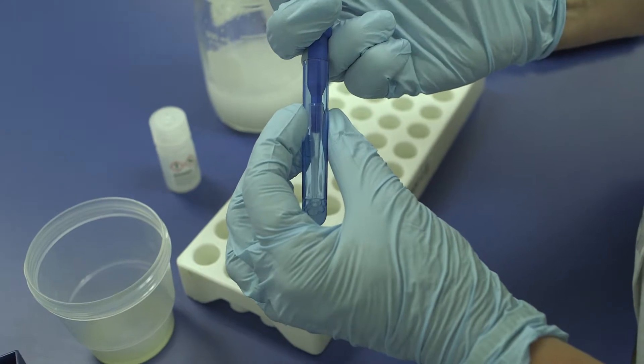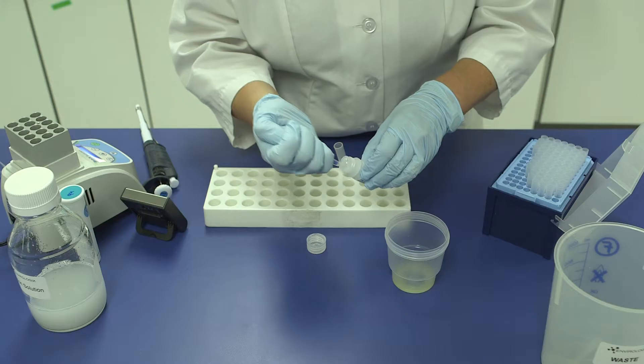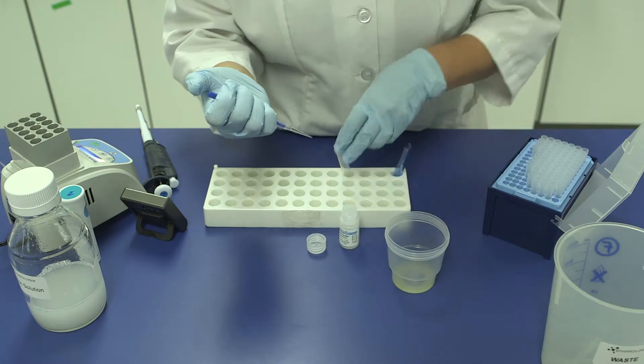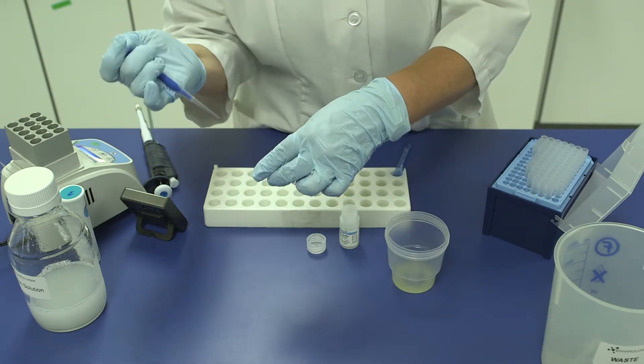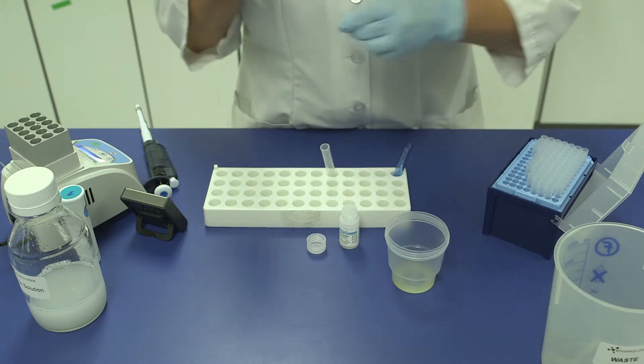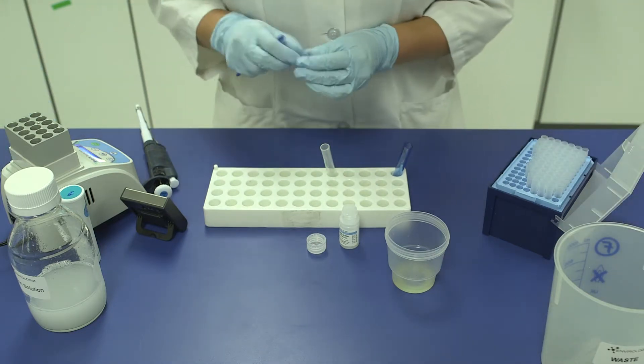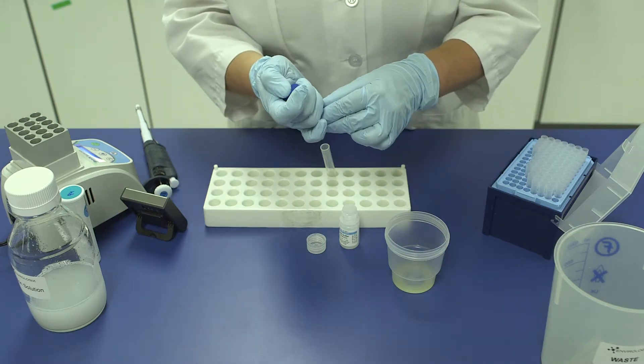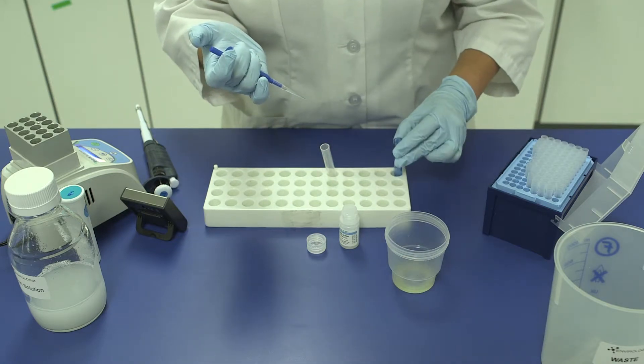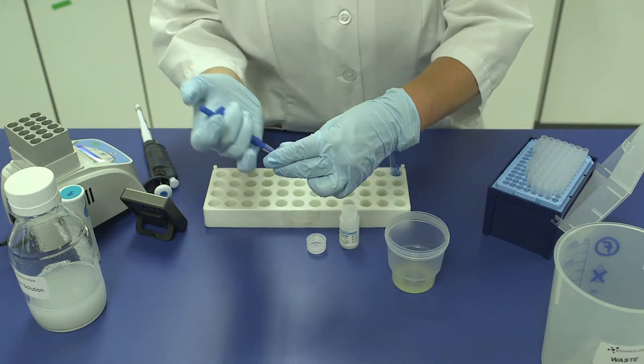Save this diluted extract in case further dilution is needed. Step 2. Pipet 100 microliters of DB5 buffer and 100 microliters of the diluted extract from Step 1 into a new reaction tube. Mix well.